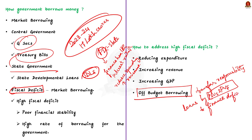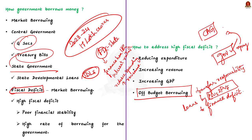These PSUs and SPVs are not borrowing for themselves but for the government, so it is the government who has to repay the loans. The reason the government resorts to off-budget borrowing is that, according to the Comptroller and Auditor General of India, these borrowings are not included while computing the debt and fiscal deficit of the government. So by using the off-budget mode, the government can borrow more money from the market without an increase in fiscal deficit.